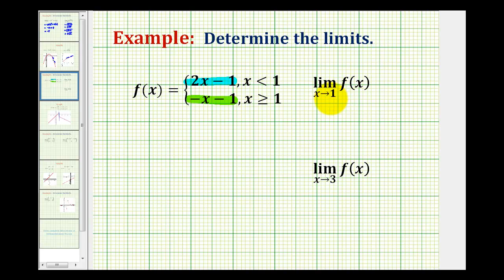So to determine if this limit exists, we need to evaluate both lines at x equals 1 and see if they return the same function value. For the first line, we'd have y equals 2 times 1 minus 1. That's positive 1.